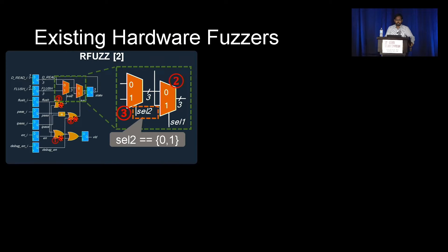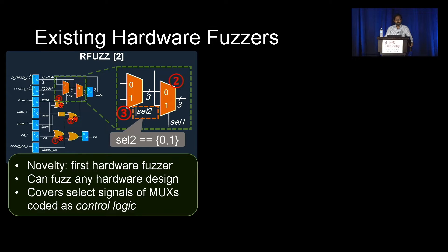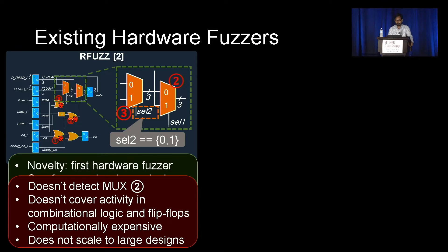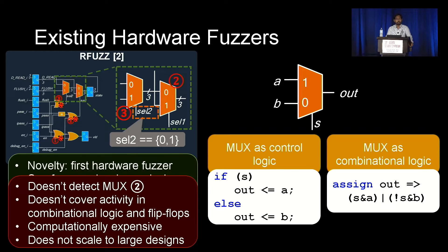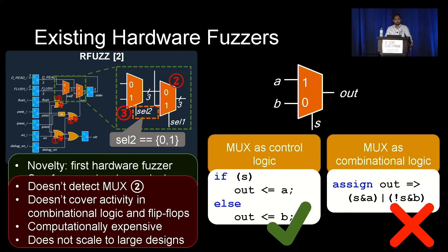rfuzzer is one of the first proposed hardware fuzzers that can fuzz any hardware design. It covers the select signals of muxes — for example, for mux 3, its select signal is cell 2, and rfuzzer checks if cell 2 takes values of 0 and 1. However, when hardware is designed, muxes can be coded as control logic using if-else constructs, or as purely combinational logic. rfuzzer can detect the first type, but not the second. So if mux 2 is coded as combinational logic, rfuzzer cannot detect it. Also, rfuzzer doesn't cover the activities in combinational logic and flip-flops, so bugs 1 and 2 are not covered. It is also computationally expensive and does not scale to large designs.